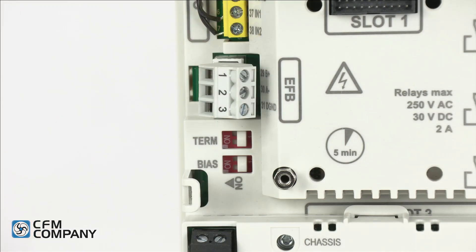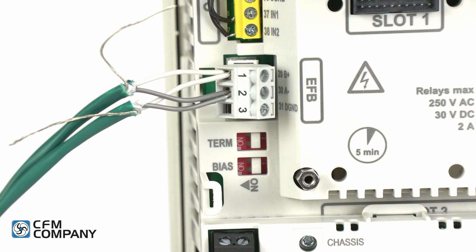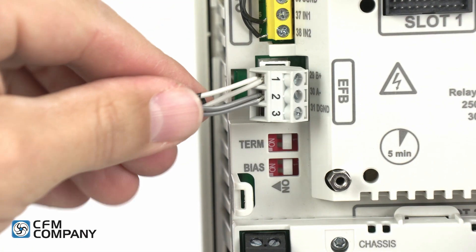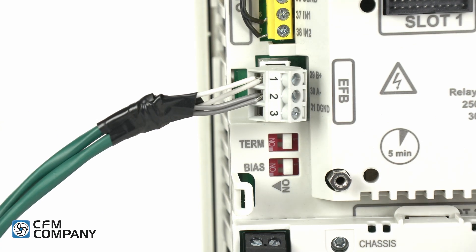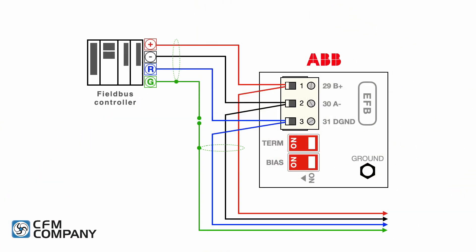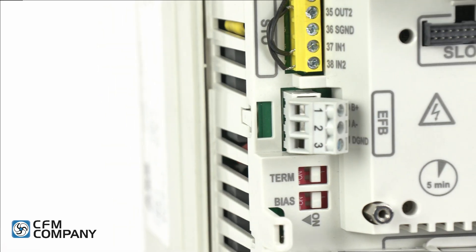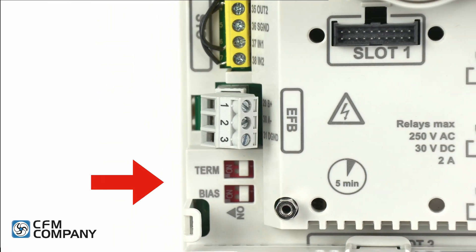For three wire communication networks, connect the optional reference wire to terminal 31 labeled DGND. Note: the network wire shield is not landed to the drive. The wire shield should be twisted together and taped to prevent contact with other conductors.